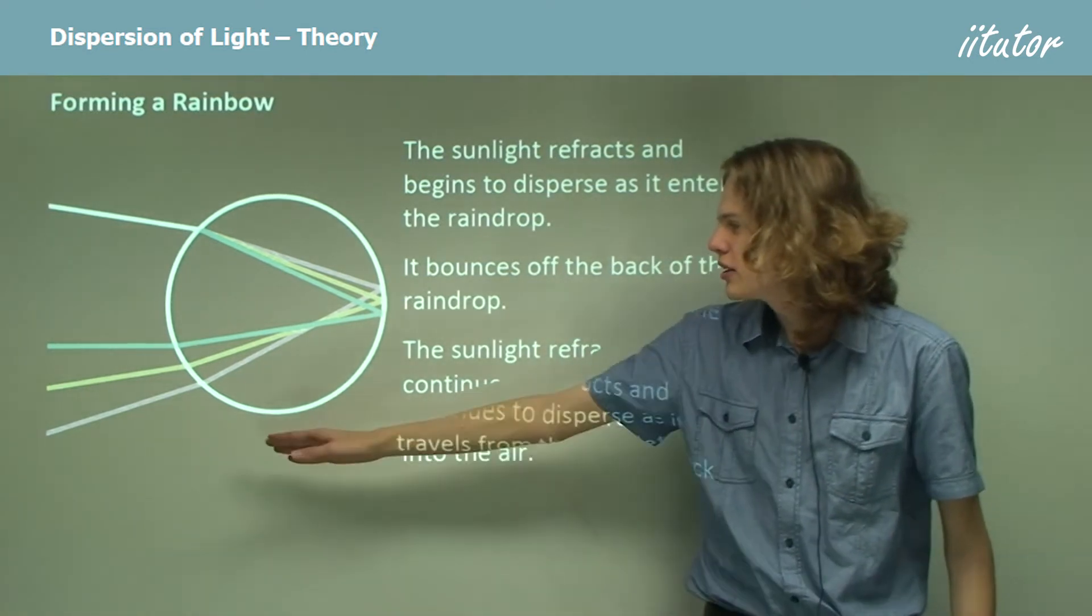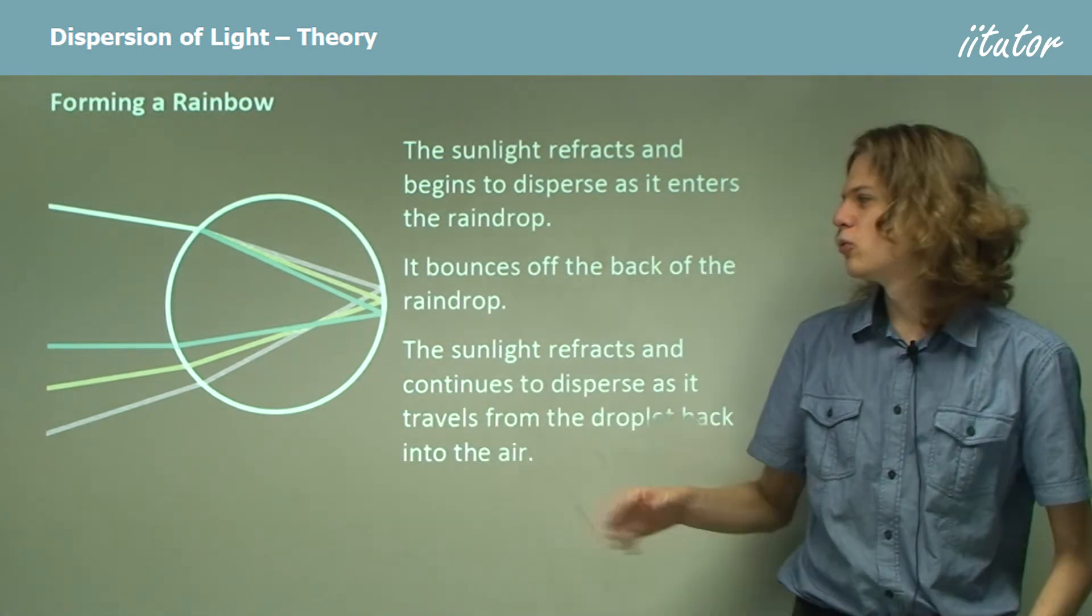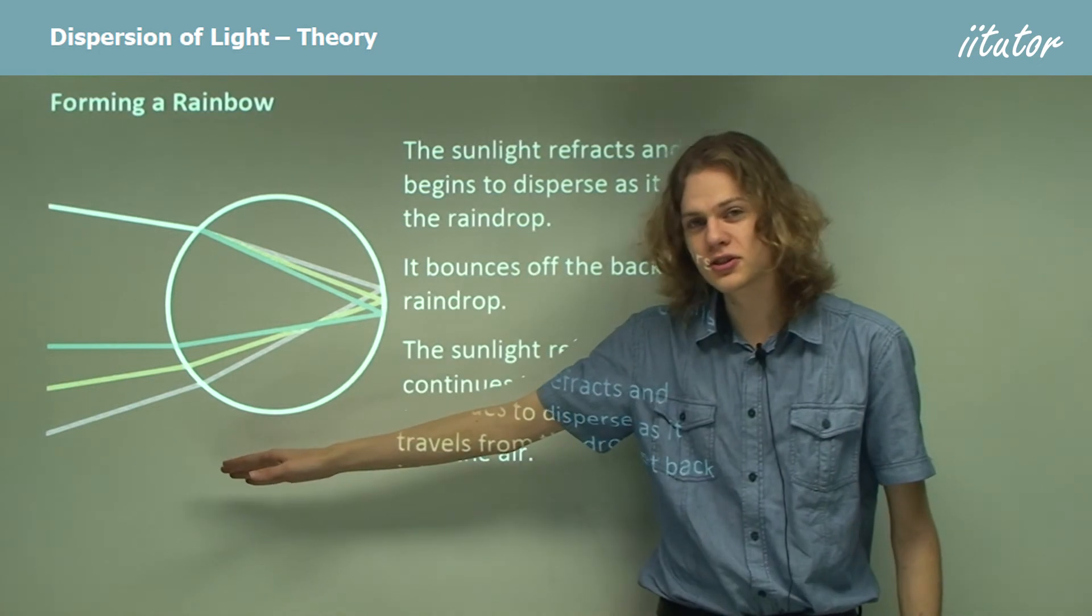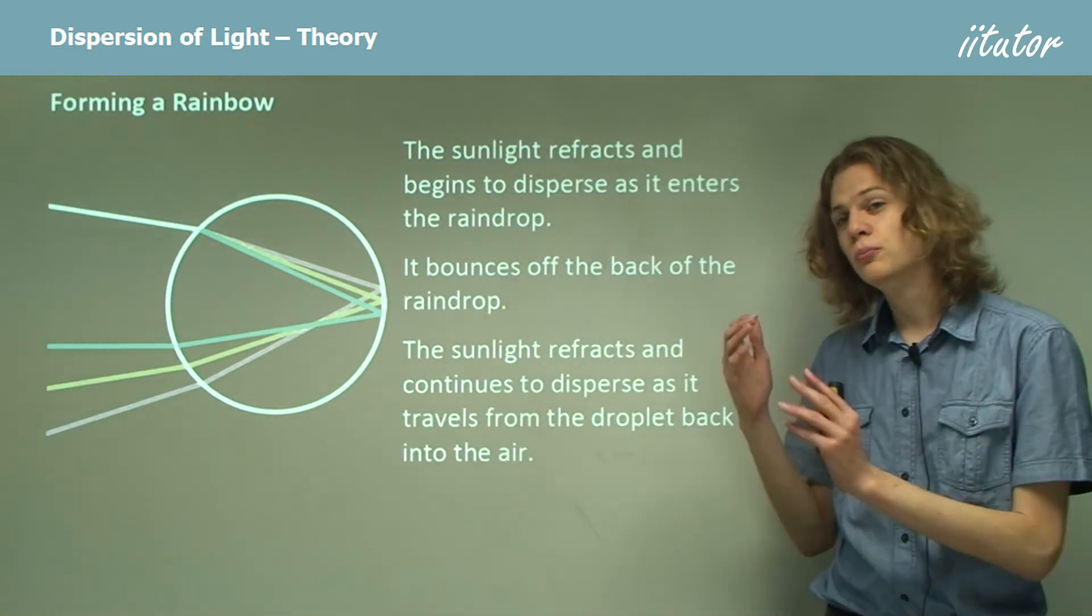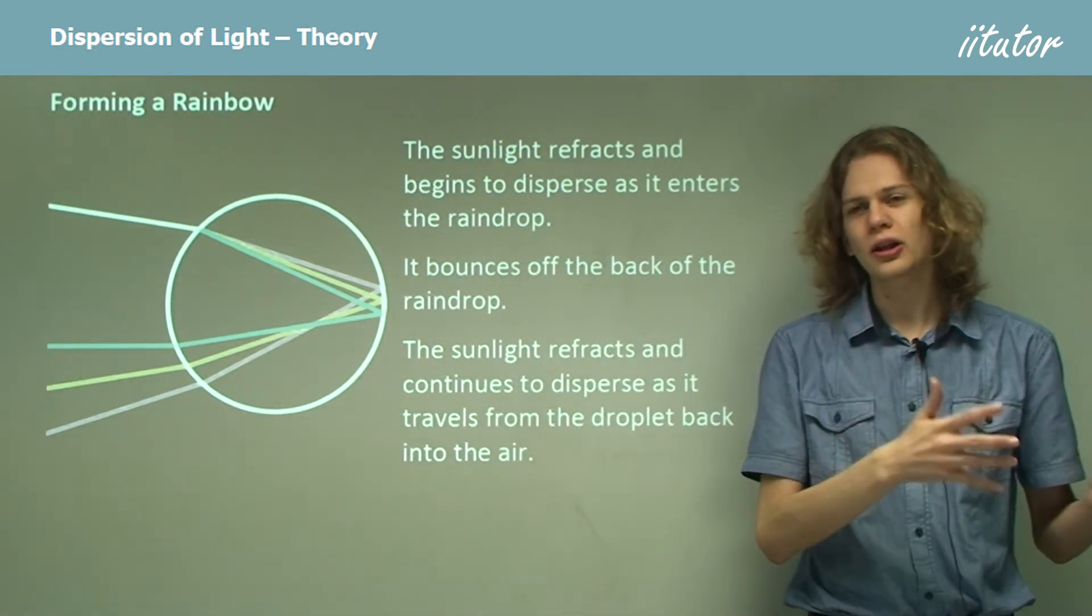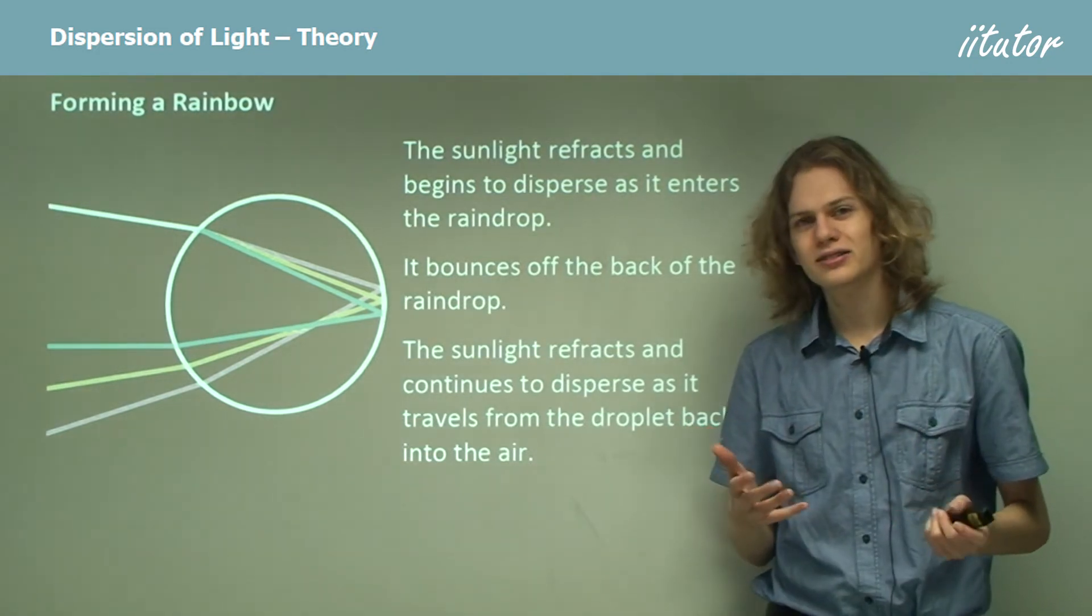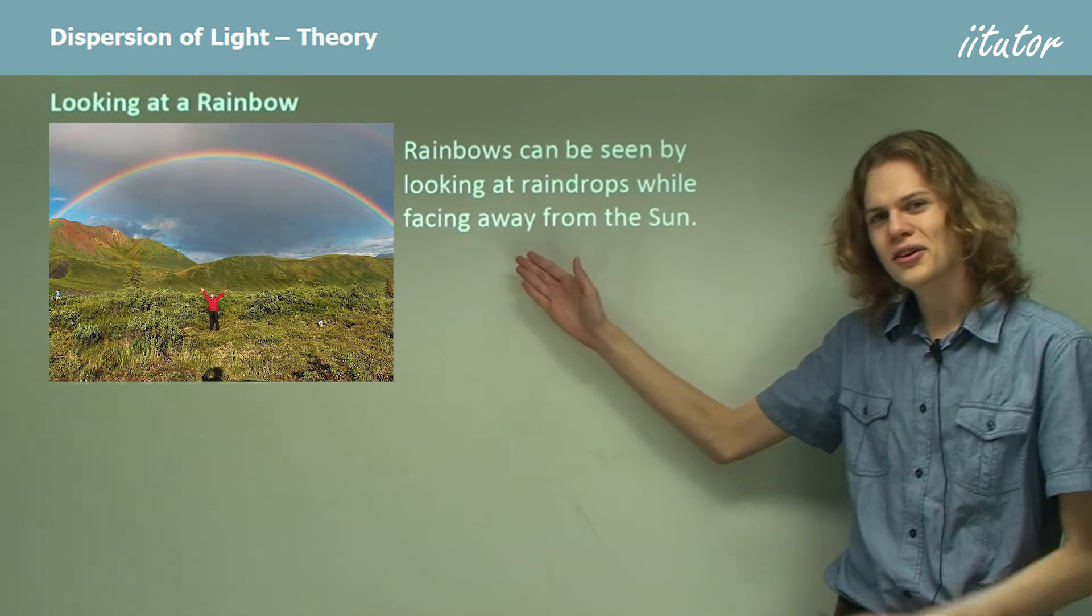We can see that it's spreading out here a little bit more than it was inside the raindrop. What we have is a separation of different colors coming out of the raindrops. So it means that we can see the blue light, yellow light, and red light, as well as all the colors in between, separating out into bands. And they'll look something like this, a rainbow.